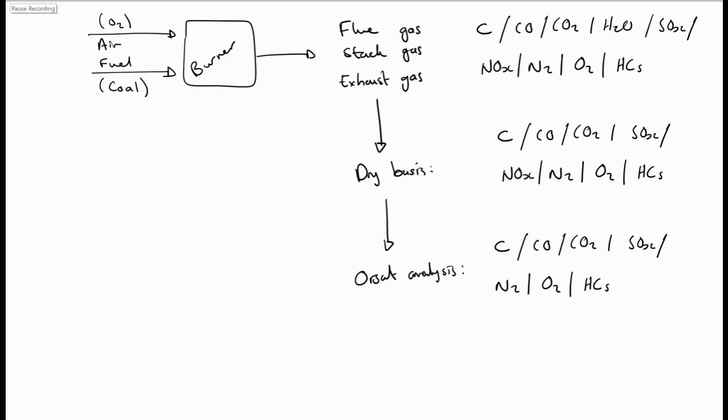We can also describe this exhaust gas in terms of an Orsat analysis. This is an analysis that we get from an Orsat piece of equipment or an Orsat analyzer. You get different types of these, but typically the Orsat analyzer does not give us any of the NOx coming from the system and also not any of the water. So it's the same components as before, but without the water and without the NOx. The Orsat analyzer was designed to distinguish between the CO, CO2 and oxygen leaving the system. That's what they mainly were used for, but you could also pick up the other components with this analyzer.